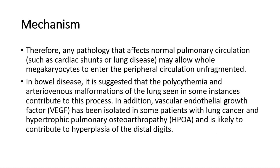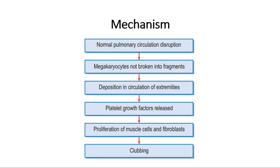In bowel disease, it is suggested that polycythemia and arteriovenous malformations of the lung seen in some instances contribute to this process. In addition, vascular endothelial growth factor, VEGF, has been isolated in some patients with lung cancer and hypertrophic pulmonary osteoarthropathy, and is likely to contribute to hyperplasia of the distal digits. This flow chart shows the mechanism of clubbing: disruption of normal pulmonary circulation leads to megakaryocytes not being broken down, they are deposited into extremity circulation, platelet growth factors are released, proliferation of muscle cells and fibroblasts occurs, and hence clubbing occurs.